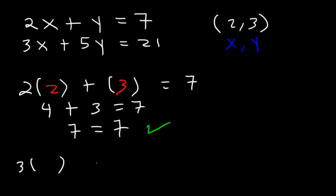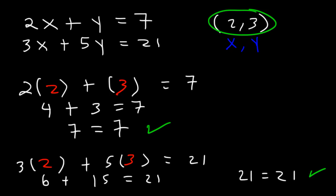So now let's replace x with 2 and y with 3, just as we did before. 3 times 2 is 6. 5 times 3 is 15. And 6 plus 15 equals 21. So therefore, this ordered pair works for the second equation. So that ordered pair is the solution.